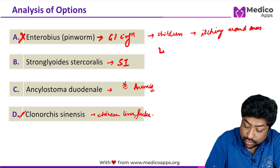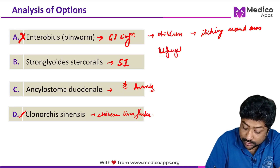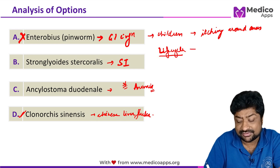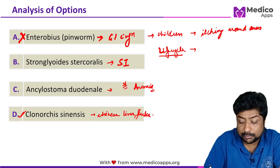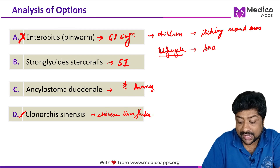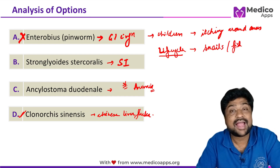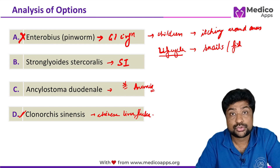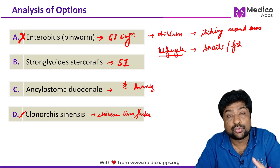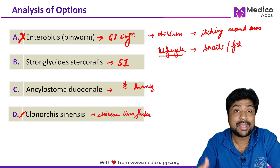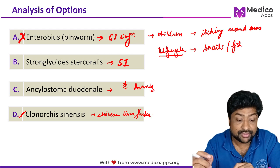Let's first talk about its life cycle. It has a complex life cycle, but most importantly, remember that snails and fishes act as the intermediate hosts. Undercooked freshwater fish is primarily the source of infection.